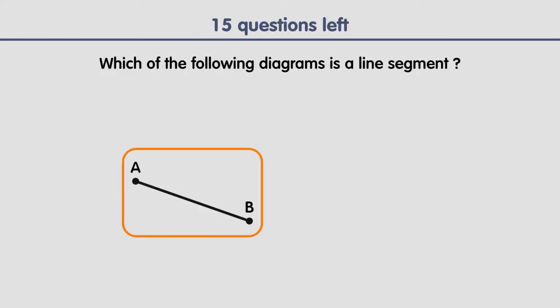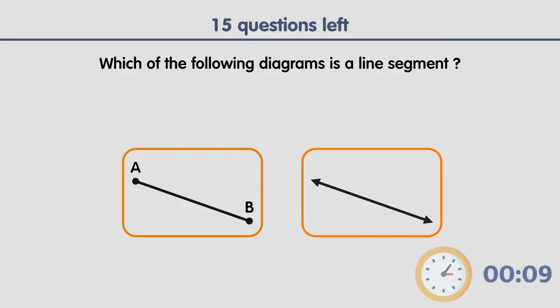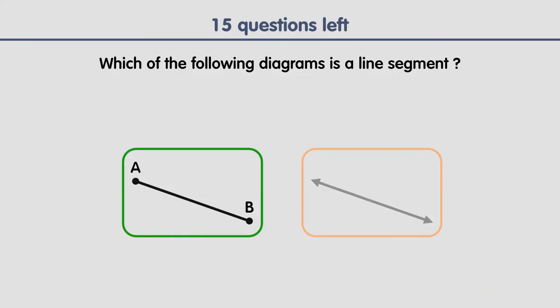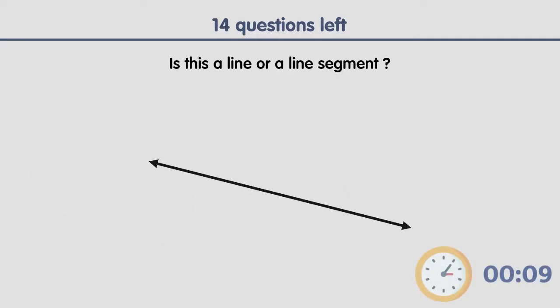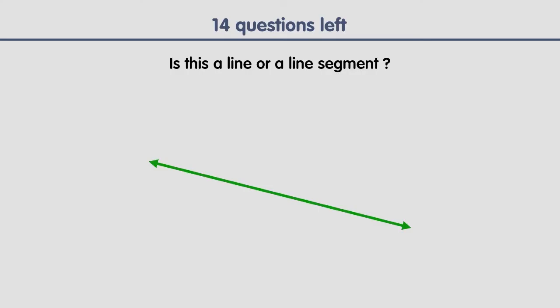Which of the following diagrams is a line segment? That's right — the first diagram is a line segment as it has two endpoints without arrowheads. Is this a line or a line segment? Correct — it's a line as it has an arrowhead at both ends.